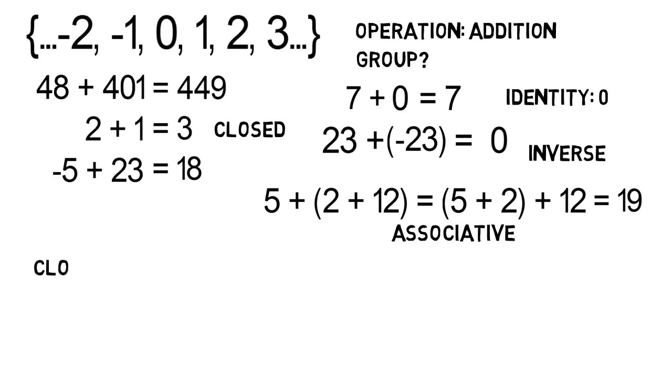So if a set is closed, has an identity, all elements have an inverse, and it's associative, then the set is called a group. And we've just shown that the set of integers is a group under addition.